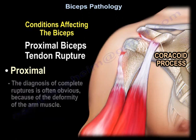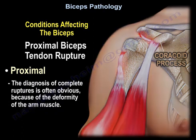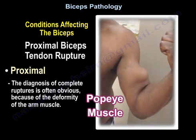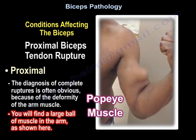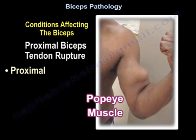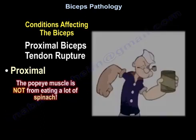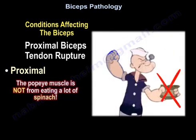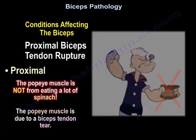The diagnosis is often obvious for complete ruptures because of the deformity of the arm muscles. You will find a big ball of muscle in the arm, as you can see here in this picture. The Popeye muscle is not from eating a lot of spinach — it is due to a biceps tendon tear.